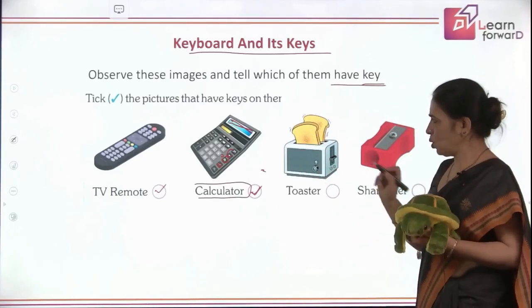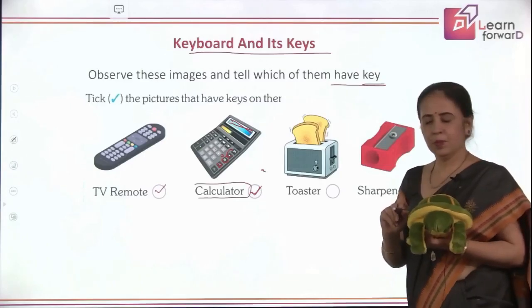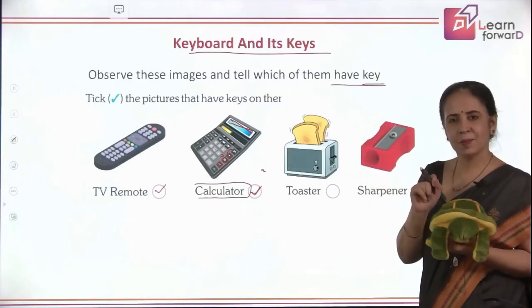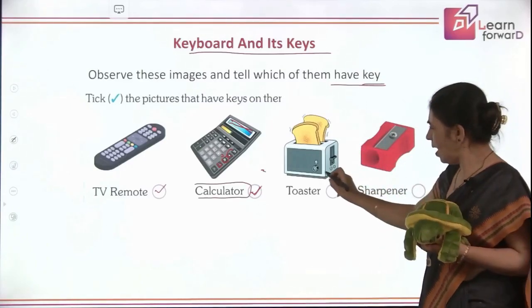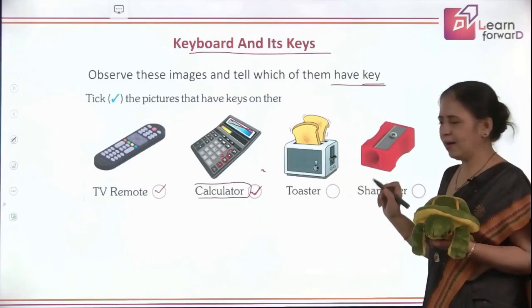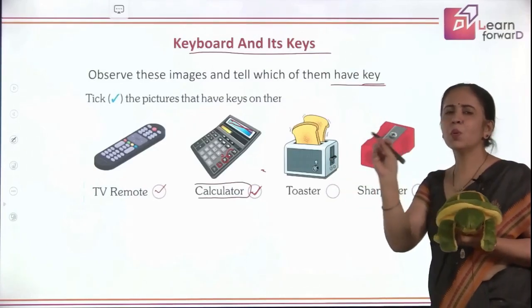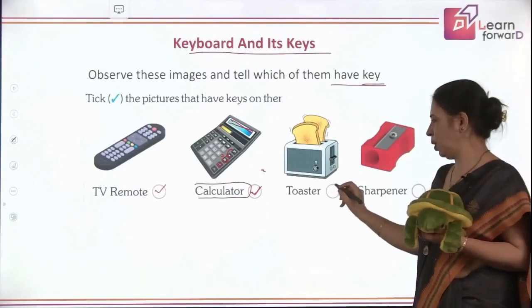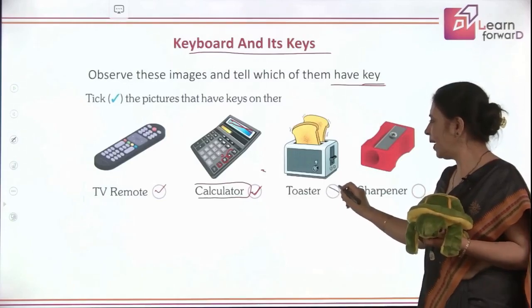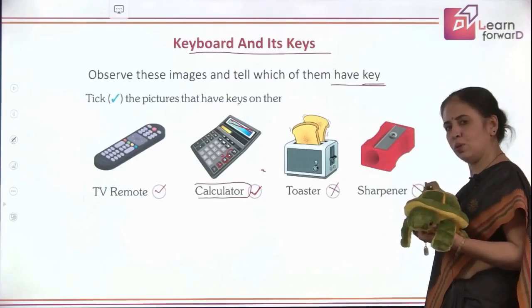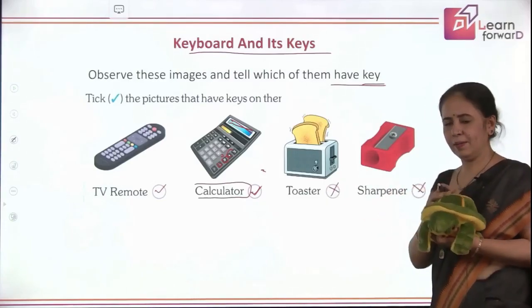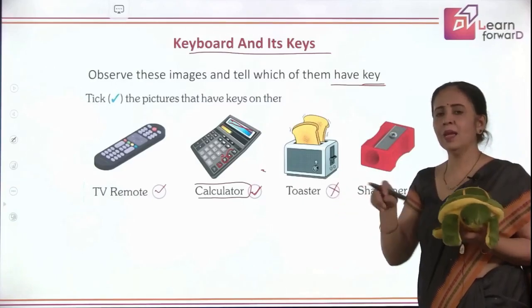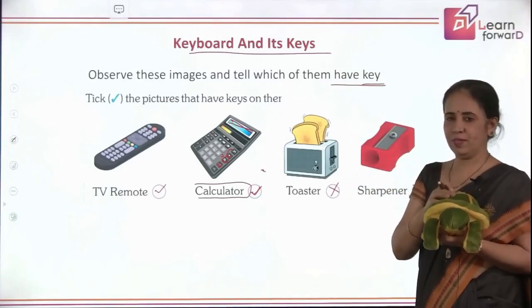Then comes the toaster. Do you think the toaster has some buttons? I can see buttons but these are only on and off buttons — not so many keys on it. And the sharpener also doesn't have keys. Rather it's a mechanical thing; it works with your efforts.